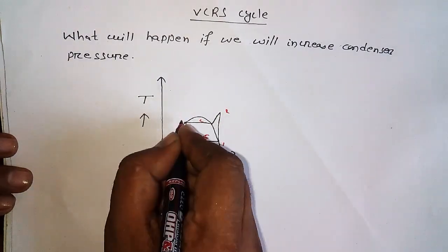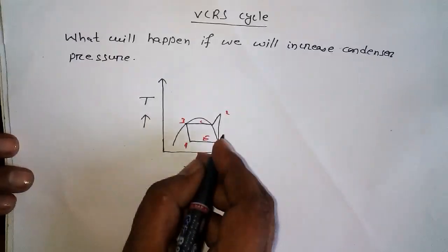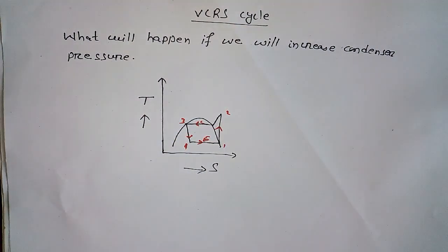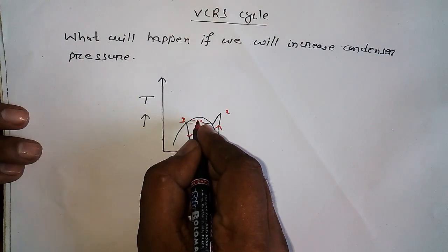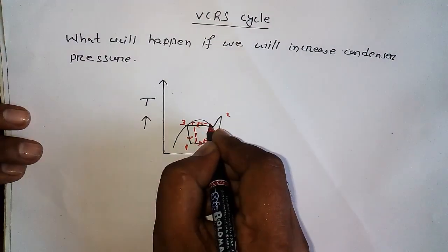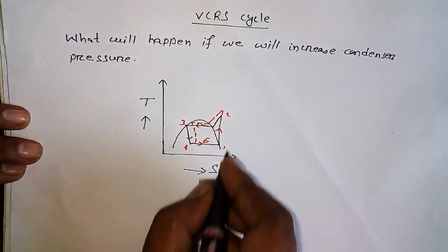Here we have the condenser, here we have the evaporator. Let's label them 1, 2, 3, 4. The refrigerant will flow in this direction. If we increase the condenser pressure a little bit, what will happen?